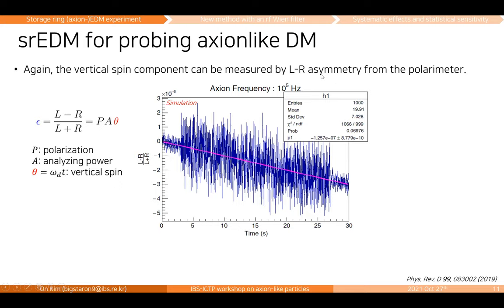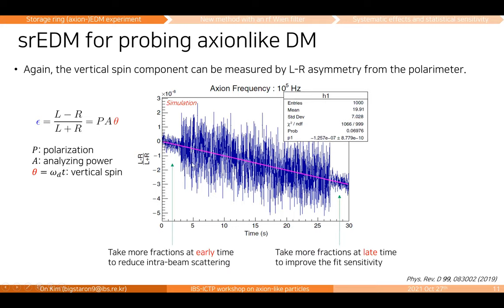The left-right asymmetry is the observable. The simulation shows the left-right asymmetry as a function of time, and there is a slope from the vertical spin component accumulating. There are smaller error bars at early and late times because we can take more statistics at earlier time to reduce intra-beam scattering systematics, and at late time to improve the EDM sensitivity.